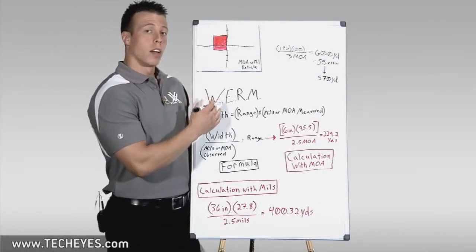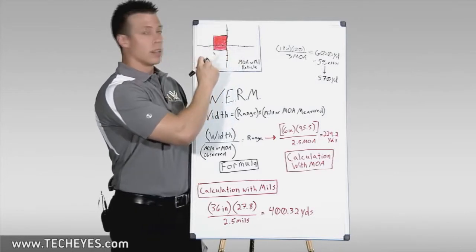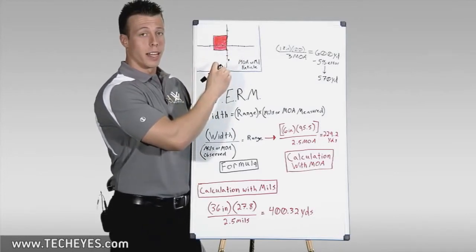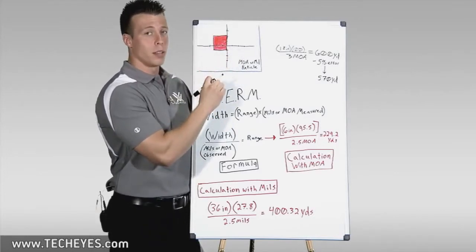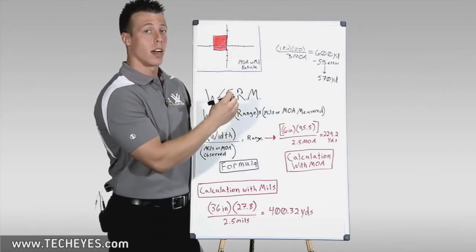The way this system works involves taking a target of known size, plugging that into the reticle, seeing how much distance is taken up, and then using those known values to be plugged into a formula which will give us an estimated distance to the target.